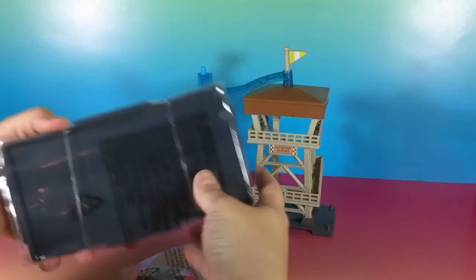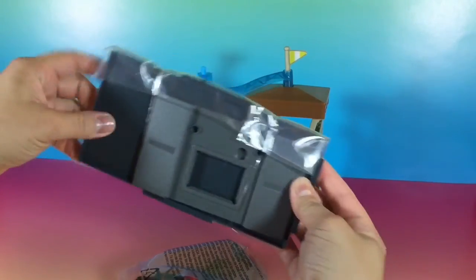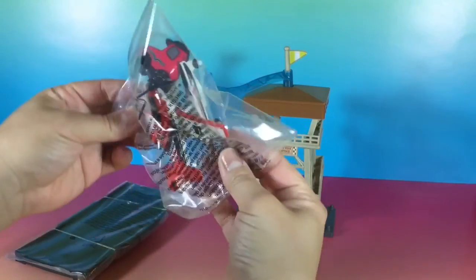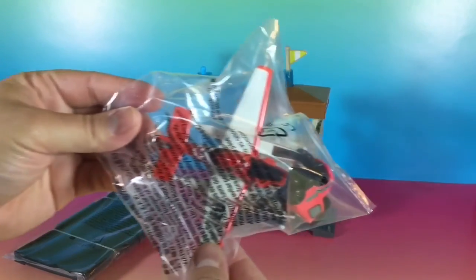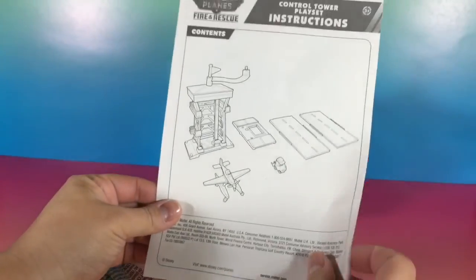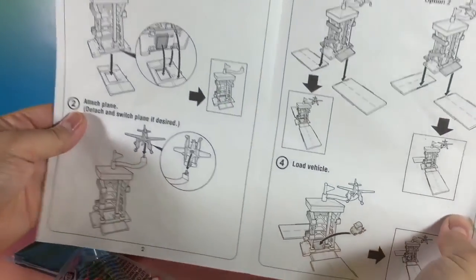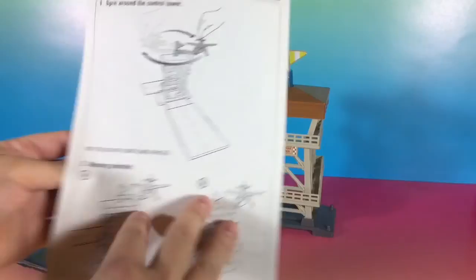Alright, so cool, there's a thing on top that swivels around on top of the tower, and that looks like that's where Dusty goes. And this looks like the landing strip. Here's Dusty and there's Patch right there. And there's the instructions. Alright, looks like there's two different ways to build this.